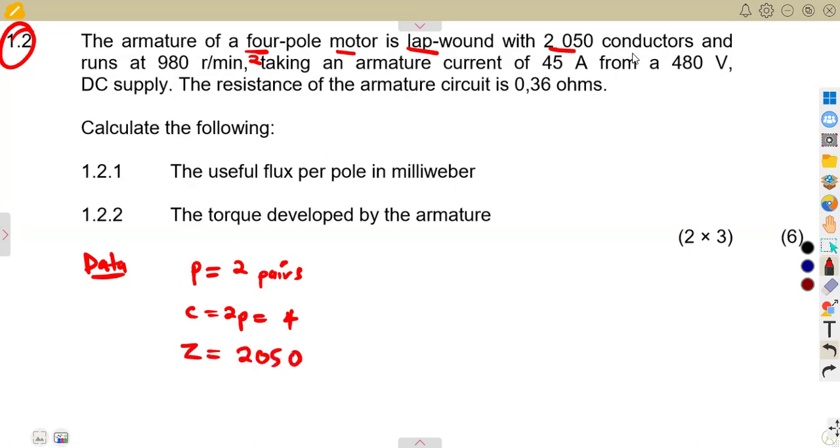That is 2050 conductors. Runs at 980, that is the speed, 980 revolutions per minute. Also taking an armature current of 45 amps from the voltage of 480 volts. They already told us the motor, but you need to know if it is drawing in current, it's a motor. DC supply. The resistance of the armature circuit is given at 0.36 ohms.